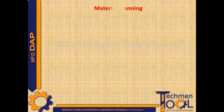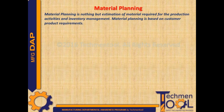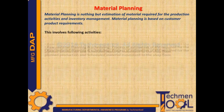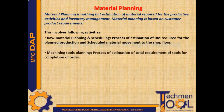Material planning is the estimation of material required for production activities and inventory management. It is based on customer product requirements. This involves raw material planning and scheduling — the process of estimating raw material required for planned production and scheduling material movement to the shop floor.